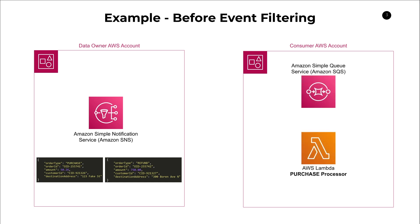A very typical setup in this type of architecture would be to have a queue where you get your SNS messages delivered, and then a Lambda function — and based on the name I'm hinting at the intent. This Lambda function only wants to process purchase events; it does not care about refund events. Typically you'd create your function, create your queue, wire them together via a subscription, and subscribe your SNS topic to that queue. Using this configuration, every message published to the SNS topic gets delivered to the queue and invokes the Lambda function, even though we only care about purchases.